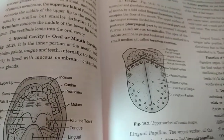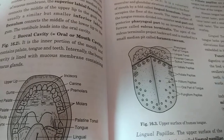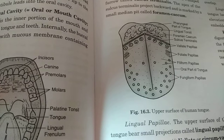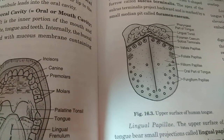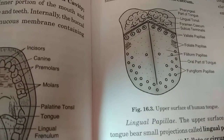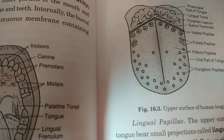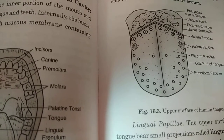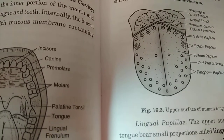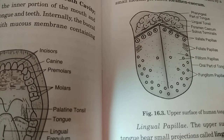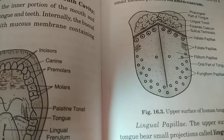The tongue is a taste organ. It helps in chewing by sending the food under the grinding teeth. It helps in swallowing the food. It acts as a brush to clean the teeth. It can also play a role in speech and forming words, along with the lips, teeth, and the hard palate.